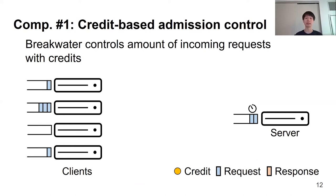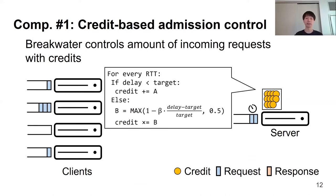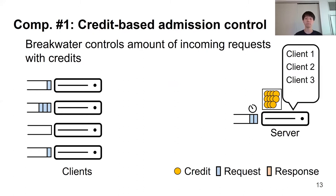With Request Queuing Delay as a congestion signal, Breakwater controls the amount of incoming requests using credit-based admission control, inspired by recent network congestion control in data centers. Each RPC server maintains a pool of credits. The number of credits in the pool is adjusted based on whether the server is overloaded or not. For every RTT, if the queuing delay is less than the target — that is, if the server is not overloaded — it additively increases the number of credits. Otherwise, if the server is overloaded with queuing delay exceeding the target, it reduces the number of credits with a scaled multiplicative decrease.